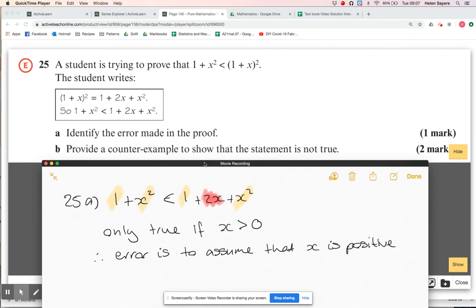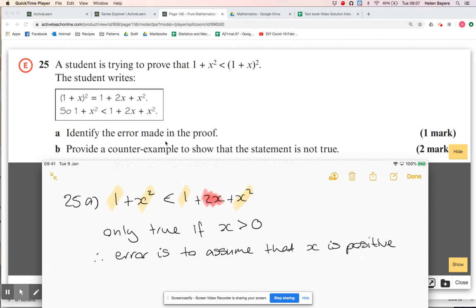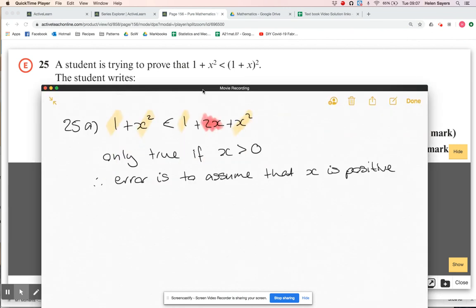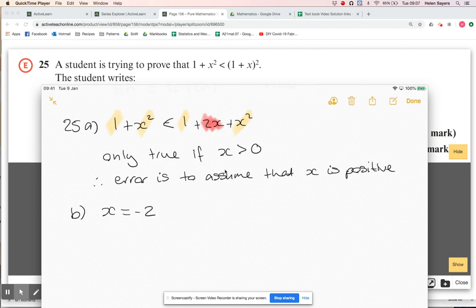Now provide a counterexample. Counterexamples are great - you don't need to do any algebra, just find a value where it doesn't work. If we've answered part a, we don't want to choose a positive value for x because we're saying it is true if x is positive. So let's use x equals minus two.